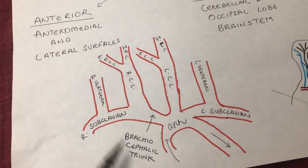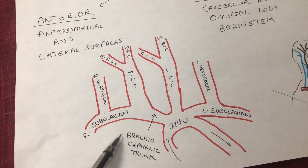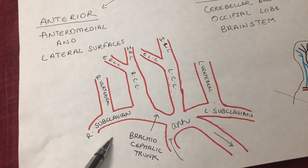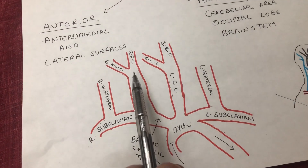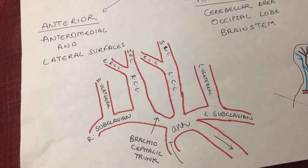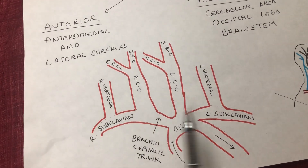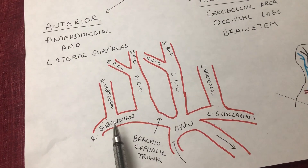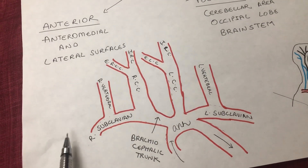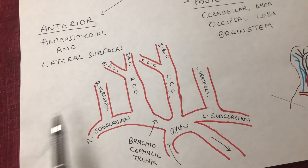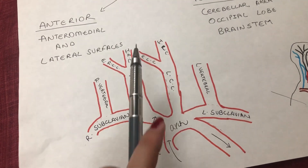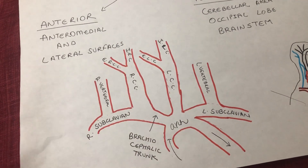The brachiocephalic trunk, as the name implies — brachio meaning arm, cephalic meaning head — forms two main arteries: the right subclavian and the right common carotid. The subclavians together supply blood to the lateral chest, the arms, and the shoulders, and the carotids ascend upwards to supply blood to the skull.